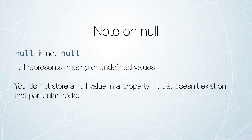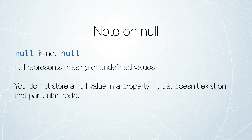Null is not null — that's probably a confusing statement. Null represents missing or undefined values in Cypher. When you store a value for a property on a node, you never actually store the value null. You simply do not specify that property on that node. That's the way Cypher, as a schema optional language, works. Nodes that have the properties have them defined; nodes that do not have those properties simply don't have them defined. This prevents the very sparse type of storage you might see in a table where a lot of values may be null.